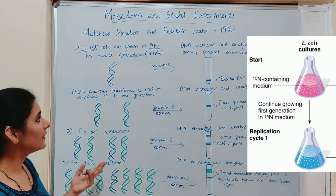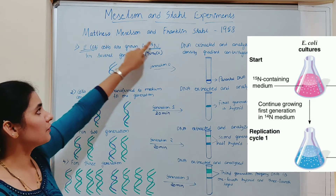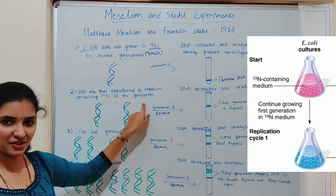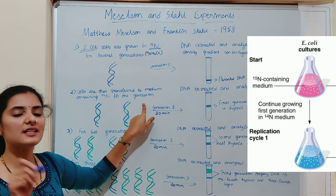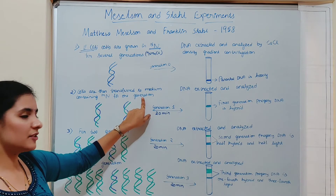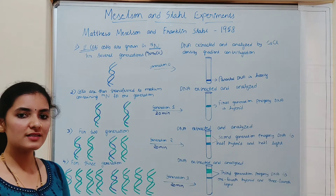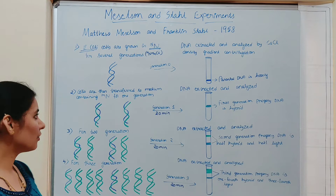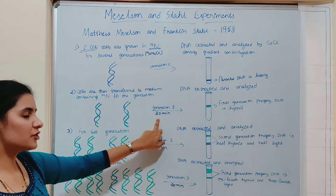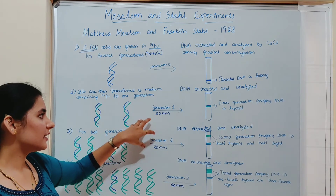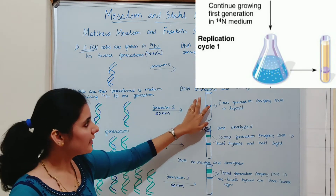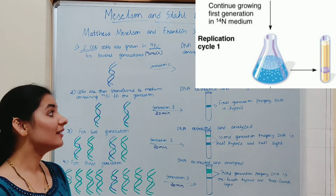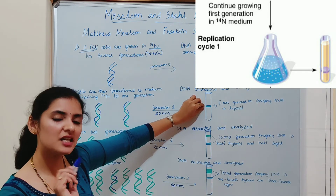In the second step, Meselson and Stahl transferred some of this E. coli grown in N15 medium into a medium containing normal nitrogen, N14, and allowed it to grow for one generation. One generation means a single E. coli divides to form 2 E. coli — kept for 20 minutes, since the generation time of E. coli is 20 minutes. DNA was extracted and subjected to density gradient centrifugation. When observed under UV light, they got a band at the intermediate position — the middle of the centrifuge tube.